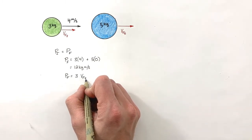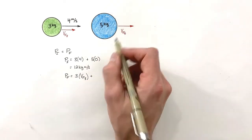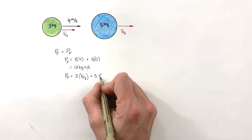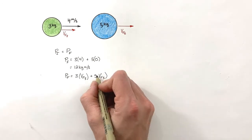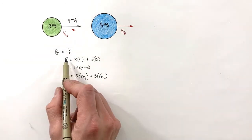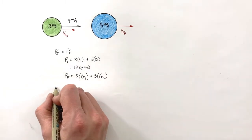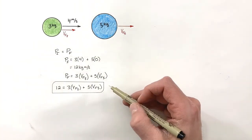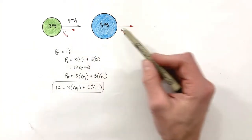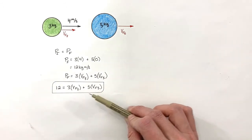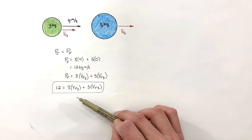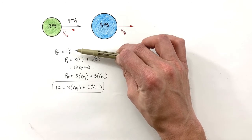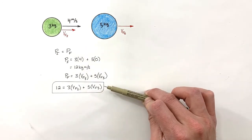We know momentum is conserved, so the final momentum is going to be 12 kg·m/s. The final momentum equals the mass of the three kilogram ball times its final velocity (V_f3), plus five times the final velocity of the five kilogram ball (V_f5). Setting these equal gives us one equation, but we have two unknowns — so looking at elastic collisions through linear momentum alone, we can't solve the problem.